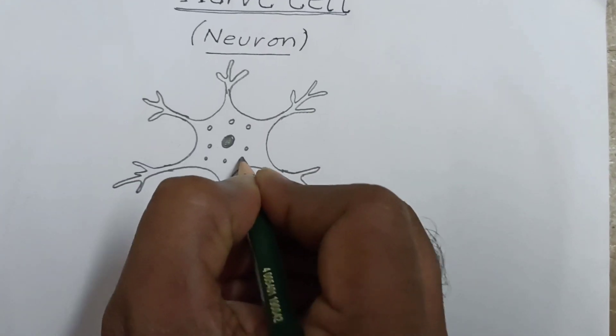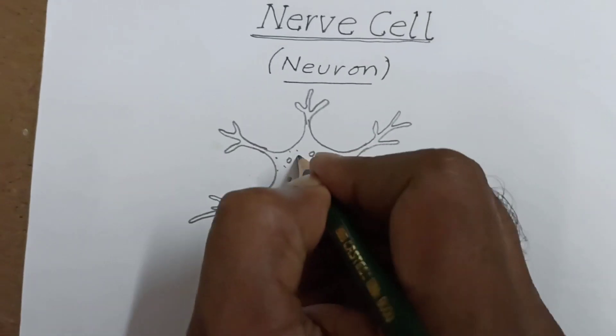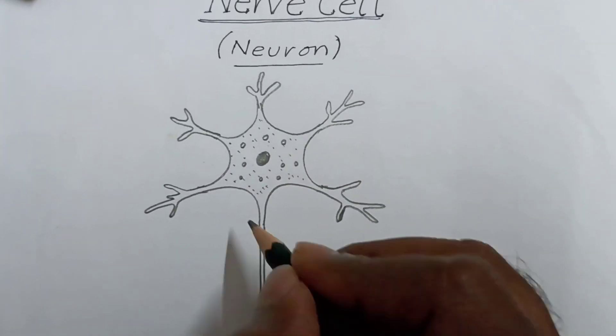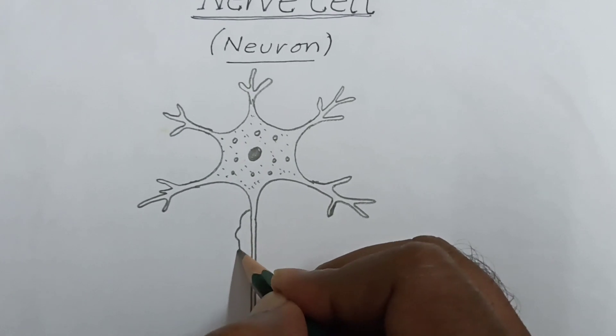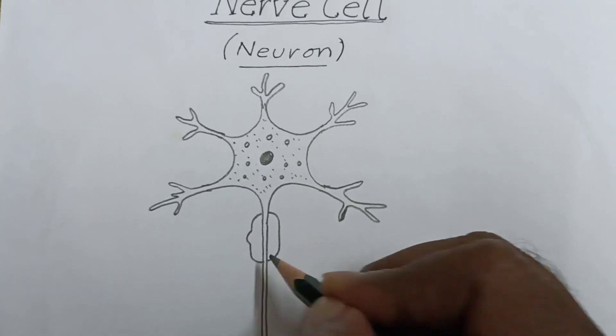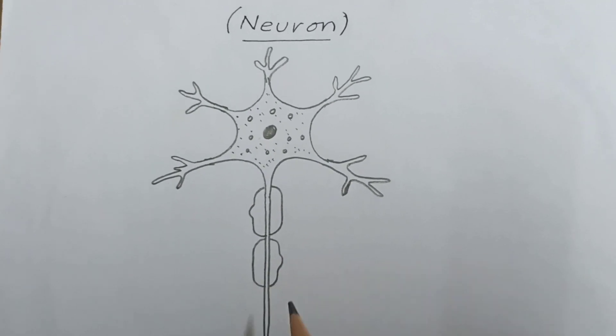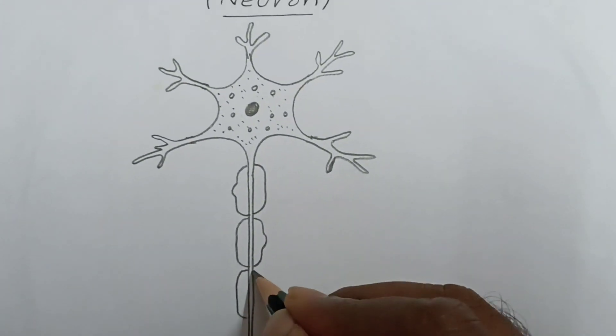This is granules. Skip some dots to represent cytoplasm. Next, myelin sheath which covers the axon. This is myelin sheath.